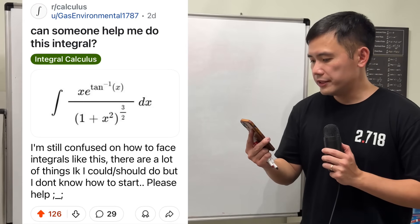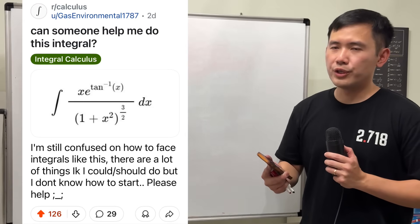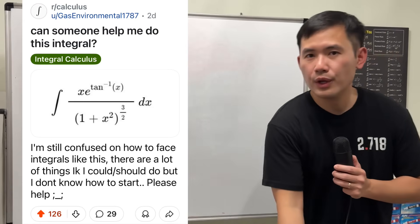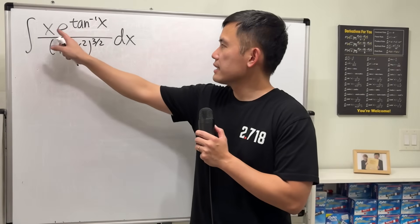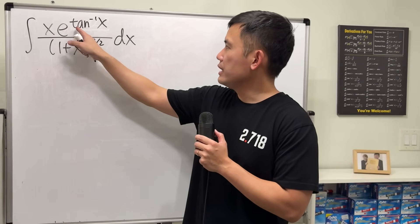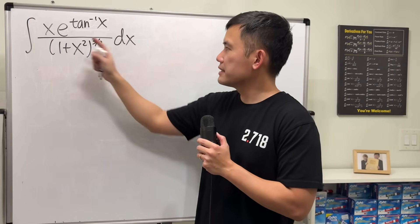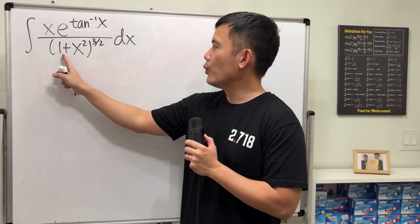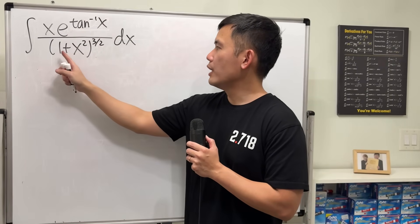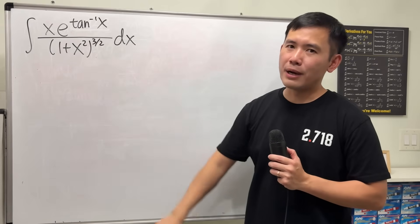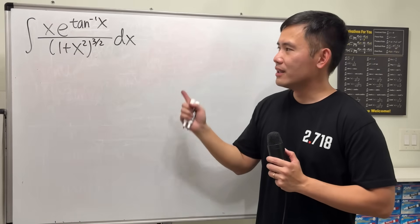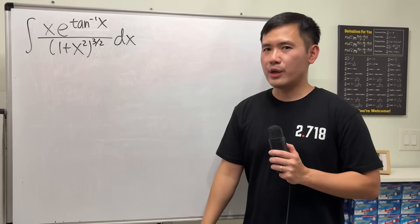Can someone help me do this integral? Sure, let's have a look. We are going to integrate x times e to the inverse tangent of x, over 1 plus x squared, raised to the 3-half power. This looks pretty scary.